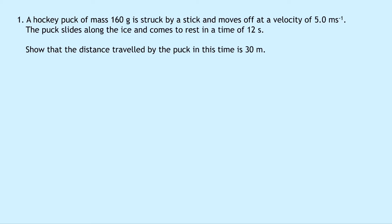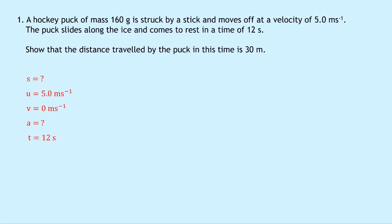We're going to do what we always do for equation of motion questions and write down SUVAT on the left-hand side. We're trying to find the displacement s. We know the initial velocity u is 5.0 meters per second, the final velocity v is 0 meters per second because the puck comes to rest, we don't know the acceleration, and the time is 12 seconds.